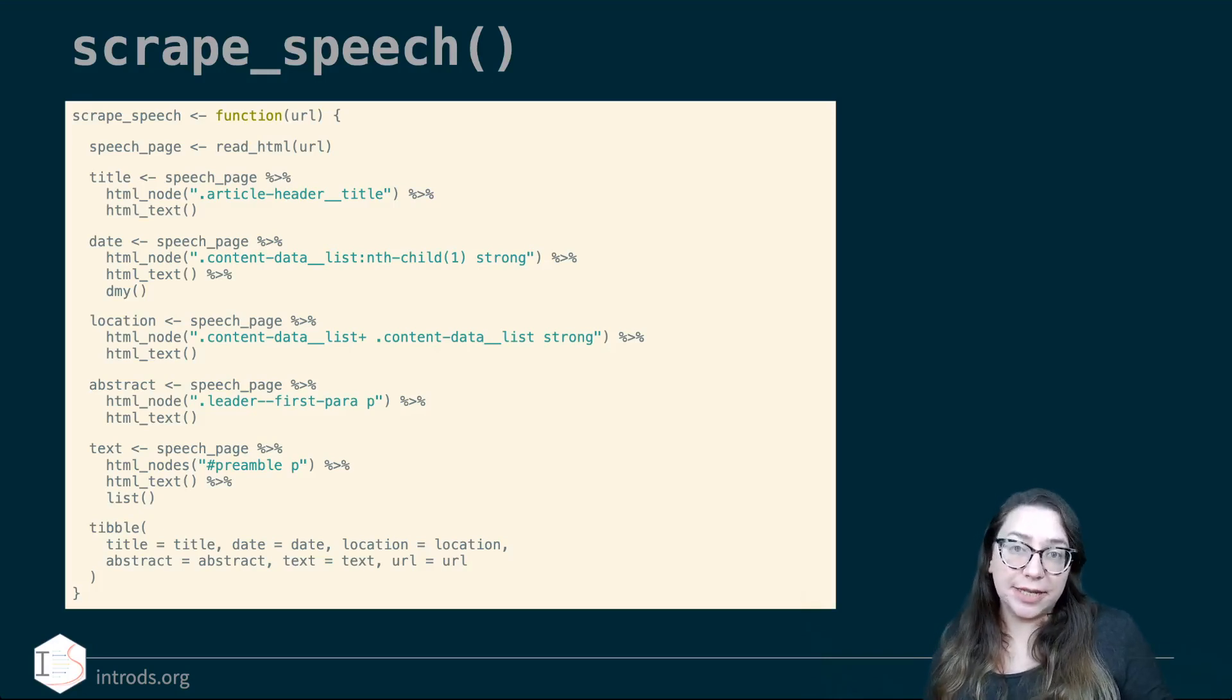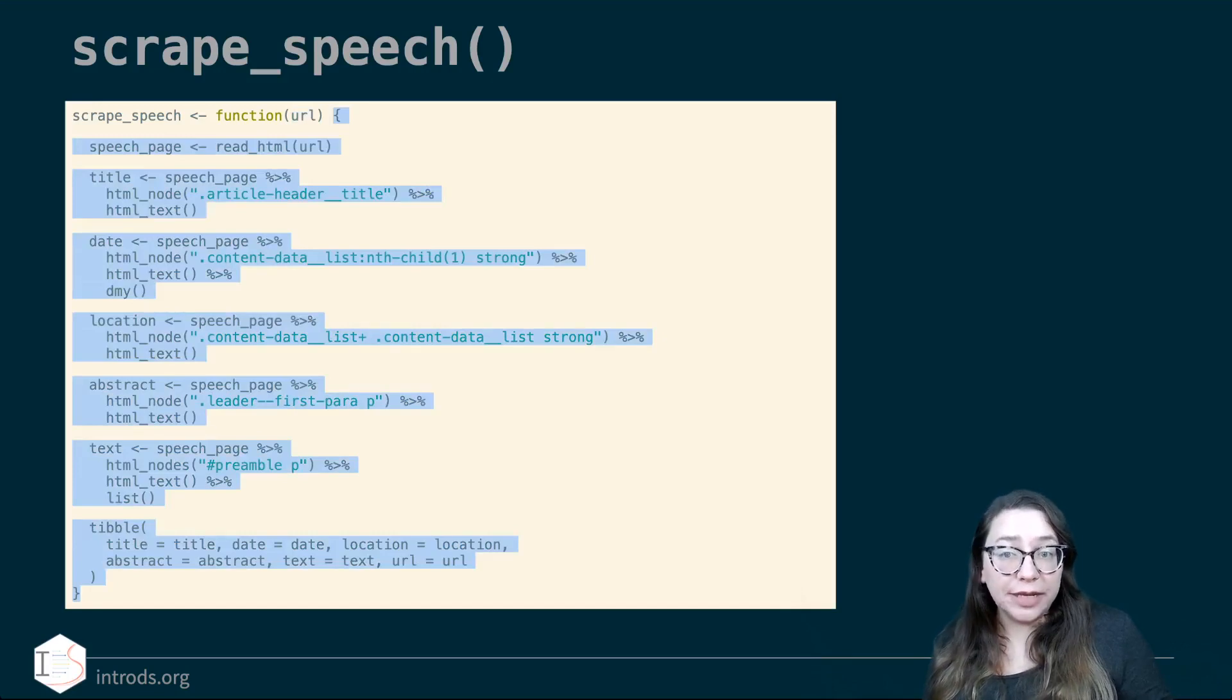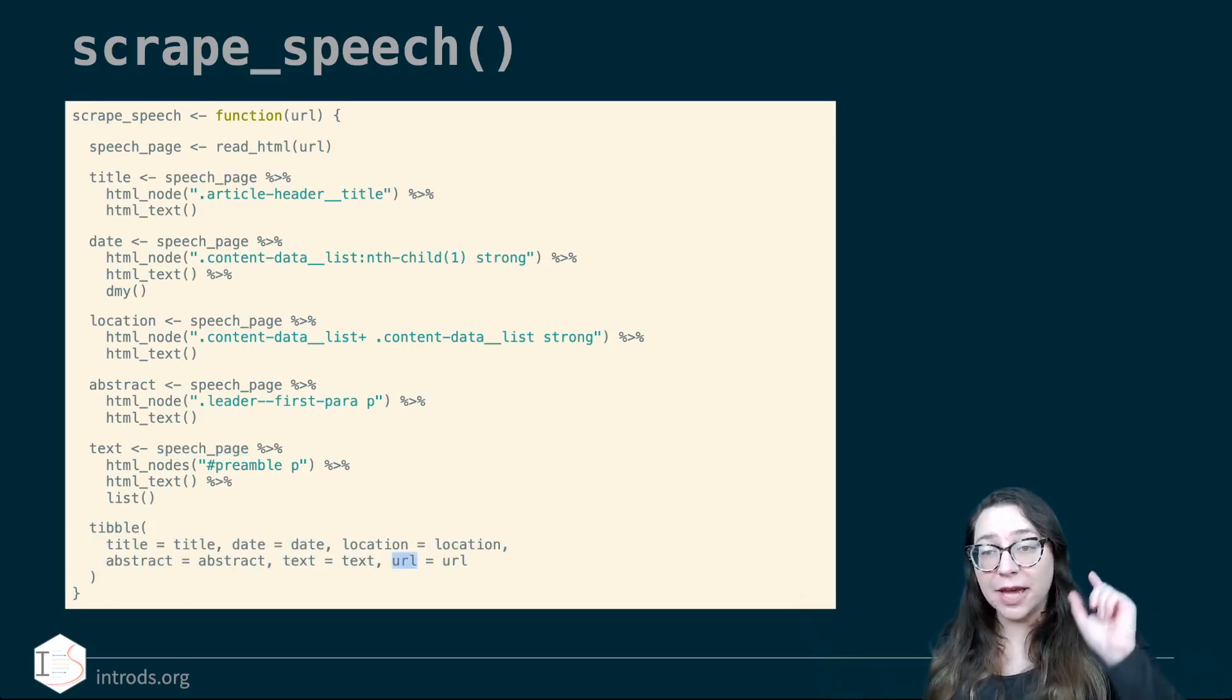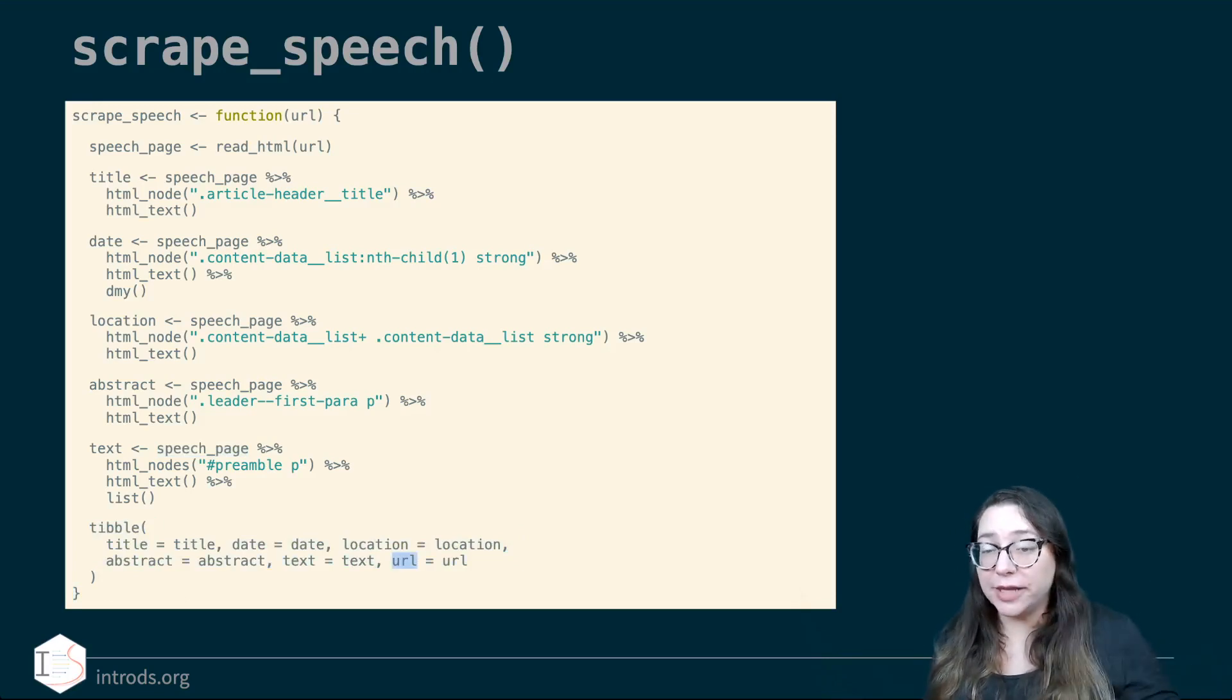So the whole thing looks something like this. scrape_speech is the name of our function. It takes one argument called URL. Within the function when we give it a URL it first reads from that URL. It stores the result as speech_page and then it does a bunch of extraction of information and parsing that speech_page object to get things like title, date, location, abstract, and text out. And then we put it all back together into a tibble along with the URL that we gave it. So that argument actually gets used directly only in two places in our function. One's to read the page and the other one to store it as part of our output.